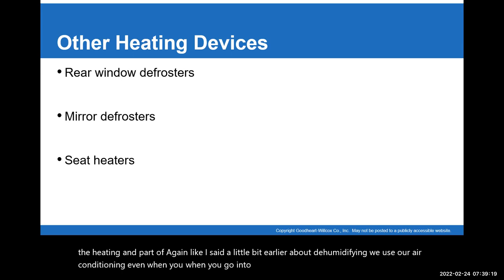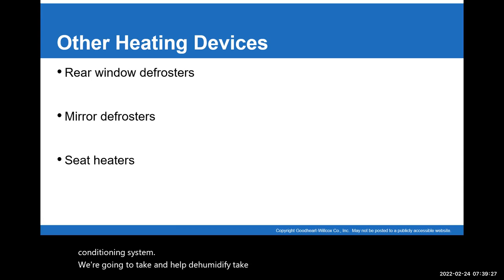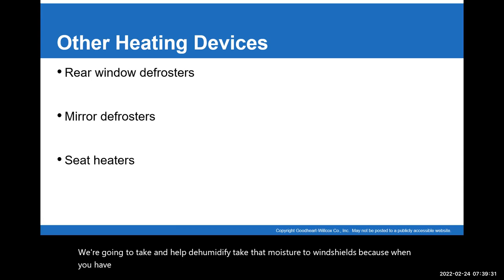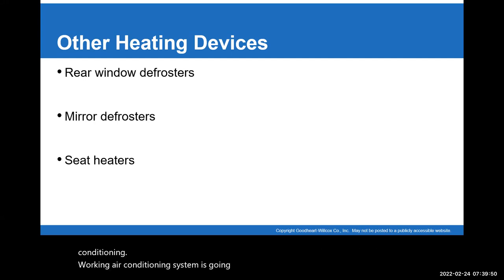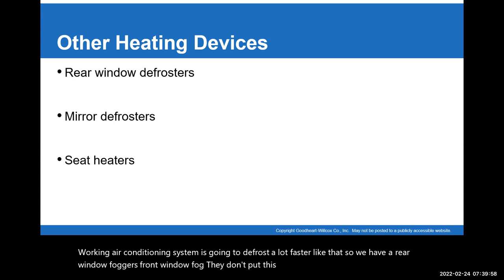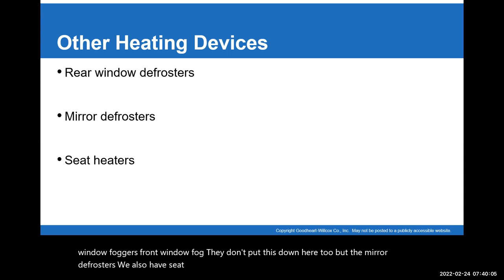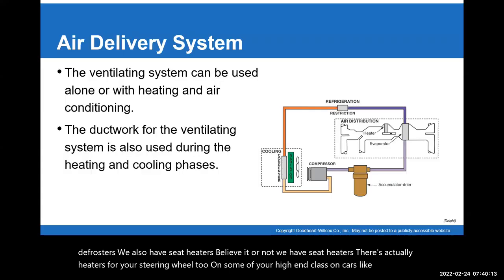We use air conditioning even when you go into defrost mode. You're going to use the cooling system to help dehumidify — take that moisture out of the windshield. When you have a cold morning and your windows are all fogged up, it would take a long time for the heater alone to clear up the fog. But if you have a working air conditioning system, it's going to defrost a lot faster. We also have rear window defoggers, front window defoggers, mirror defrosters, seat heaters, and even heaters for your steering wheel on some high-end cars.